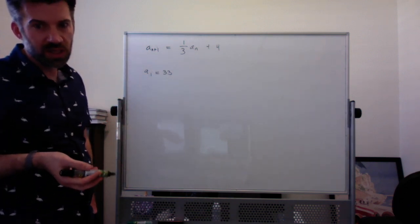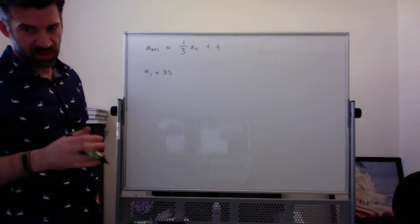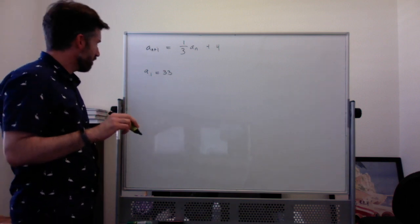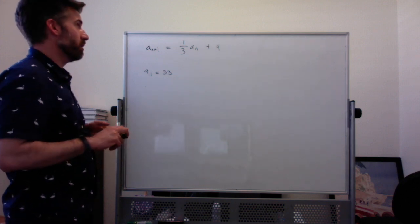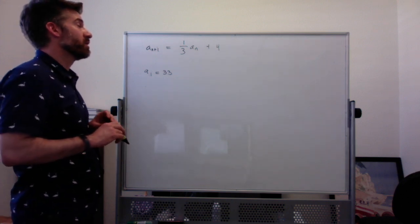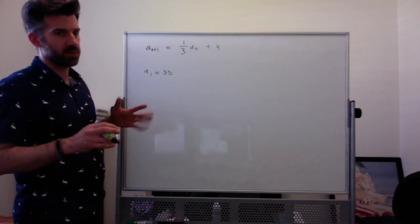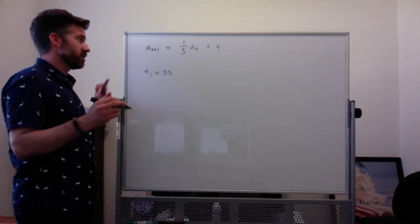We don't really need to know A sub 1 equals 33. I mean, it's mildly important, but you don't actually need to know that to figure out the limit. I would actually call it the equilibrium, because we'll learn about this a little later.